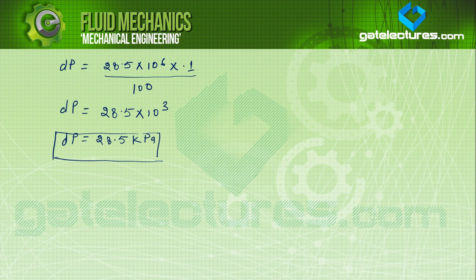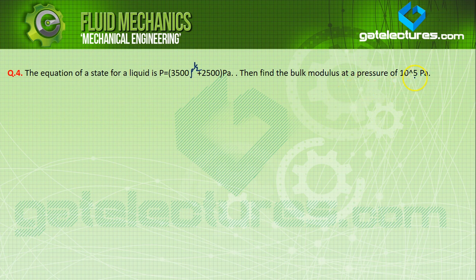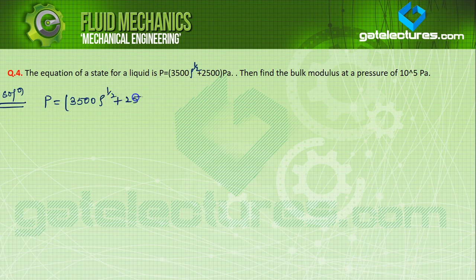Next, let's look at another example, making things a bit more complicated. We started with very simple questions and are gradually increasing the level. The next example: the equation of state for a liquid is P = 3500 × ρ^(1/2) + 2500 Pa. This is the relation of pressure with density. Find the bulk modulus at a pressure of 10⁵ Pascal.